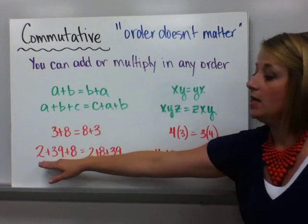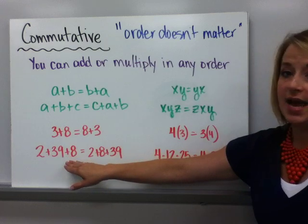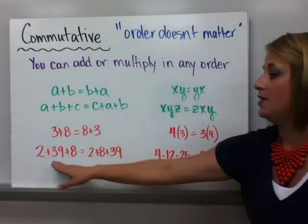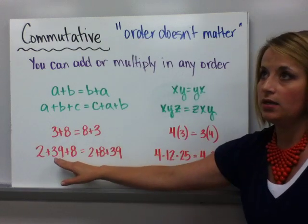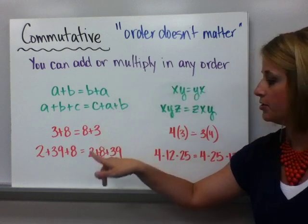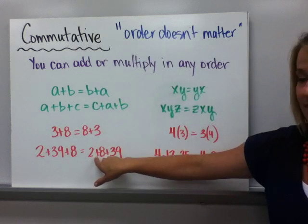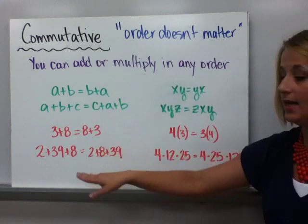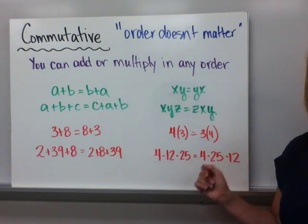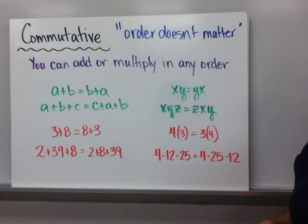Here's where it can come in handy. 2 plus 39 plus 8. If you were to just go left to right with this, 2 plus 39, you see how you're having to carry numbers? Well, the 2 and the 8, they fit together better. That's 10. Then 10 plus 39 is 49. That makes it a little bit easier.